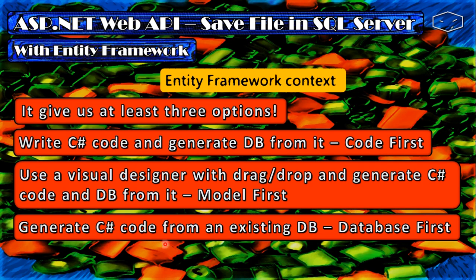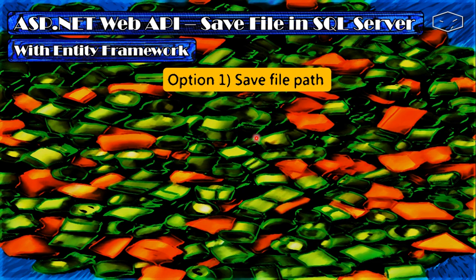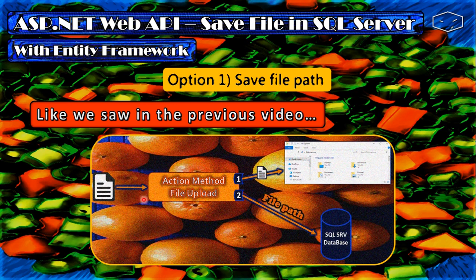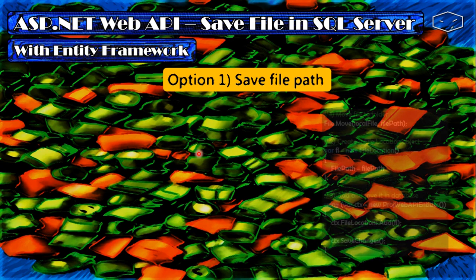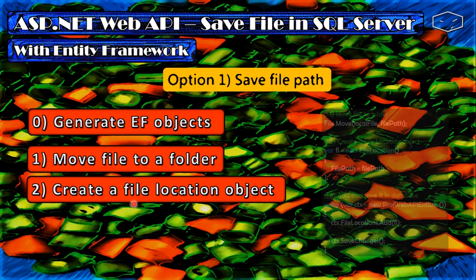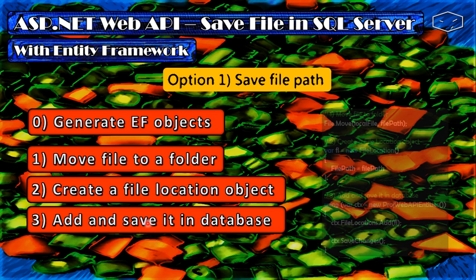Because we already did the database part in previous videos, we will use the Database First option. For Option 1 — saving the file path — we send the file to the upload action method, which performs two main operations: first saving the file in a folder on the system, then saving the file path in the database. The steps are: generate the Entity Framework objects, move the file to a folder, create a FileLocation object, then add and save it to the database.